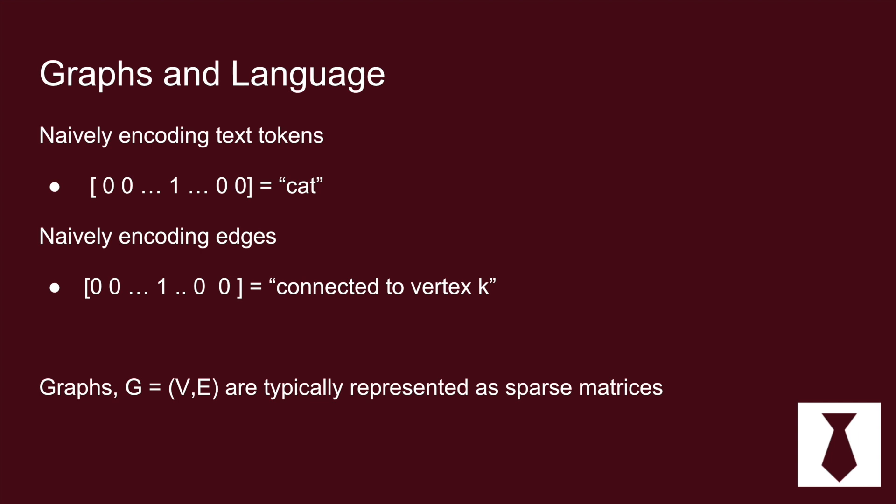So similar to language, vertices in a graph and their edges are encoded in the same way. You'd have one for the other vertex that it's connected to in the graph and then zeros for all the vertices it's not connected to.